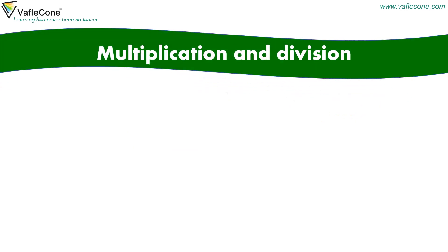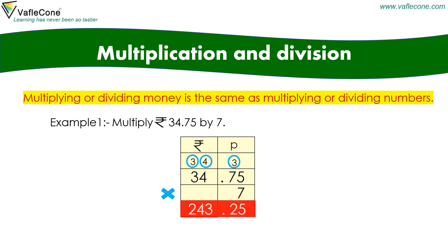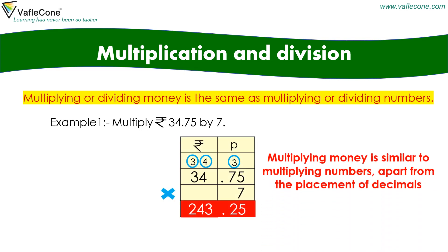Multiplication and division. Multiplying or dividing money is the same as multiplying or dividing numbers. For example, multiply rupees 34.75 by 7. Multiplying money is similar to multiplying numbers apart from the placement of decimals. So the answer is rupees 243.25.